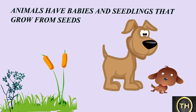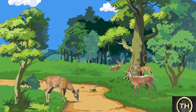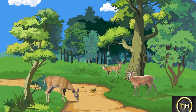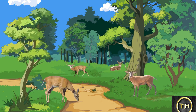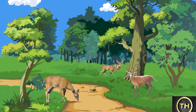Living things are of two kinds: plants and animals. Animals have babies, and seedlings grow from seeds; the seedlings then grow into plants. This tells us that plants are living things. But movement of plants is not easily seen. Plants also need food; of course, plants do not move from place to place like animals do. Their roots hold them down in one place. This is the big difference between plants and animals.